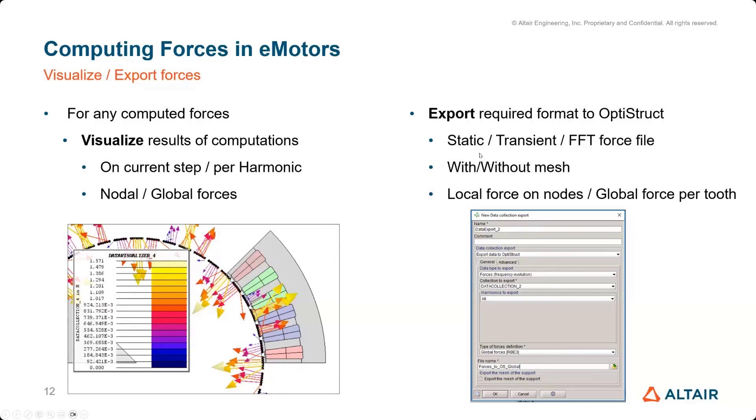If you're happy with your forces, you can export them in the right format for OptiStruct. So whether it's a static, transient, or FFT force file. In case of NVH, we'll mostly use FFT. And then we also have the choice here to export local forces or global forces. So global forces will be just one force per tooth, which makes the file a bit lighter. So it reduces the complexity of the OptiStruct file, but it creates a rigid body on the tooth surface. So it can be limiting some time. But it's probably the easiest and lightest option to use.